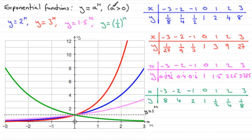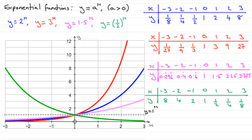As the value of a reduces down to 1, the graphs flatten toward the horizontal line y equals 1 to the power x. When a goes below 1, the graphs switch direction — sloping the other way. So functions where a is greater than 1, such as 3 to the x, 2 to the x, and 1.5 to the x, are increasing functions. When a is less than 1 but greater than zero, the functions are decreasing.